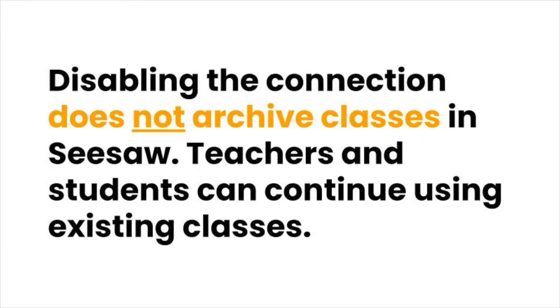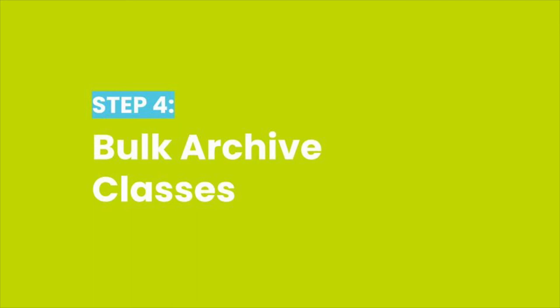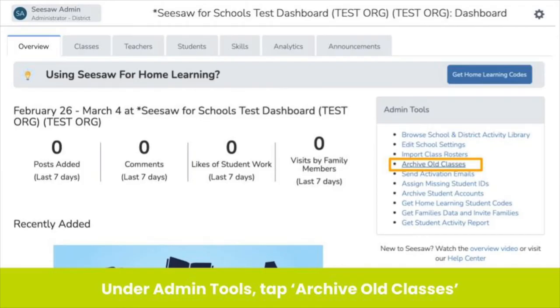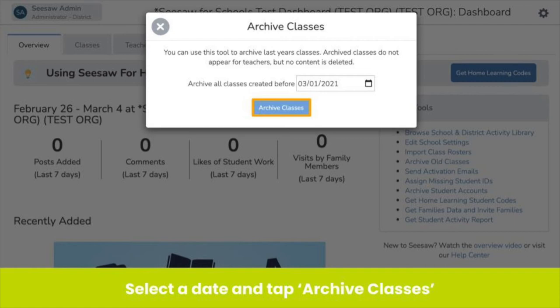Note that disabling the connection does not archive active classes. Teachers and students can continue using existing classes in Seesaw. Now that you have disabled the connection between Clever or Classlink and Seesaw, you can bulk archive classes to ensure you have accurate analytics and ensure students are able to easily toggle in and out of next year's classes instead of posting work in their previous year's classes. On your school dashboard under Admin Tools, tap Archive Old Classes. Select a date to archive classes created before that date. We recommend choosing the last day of school or the day you plan to archive classes in order to capture all of the classes that were created before that date. Tap Archive Classes and you're done!